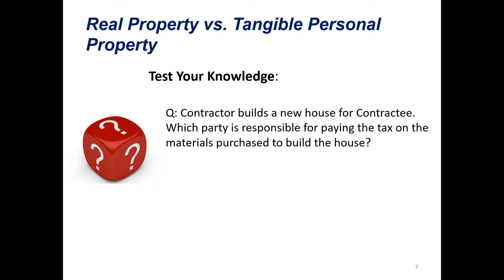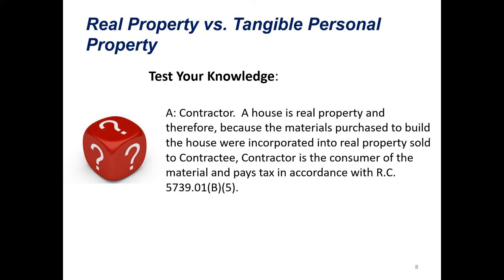First test your knowledge question: A contractor builds a new house for a contractee. Which party is responsible for paying the tax on the materials purchased to build the house? Well, a house is going to be typically considered real property, so the contractor is going to be considered the consumer—the contractor has to pay the tax on all those materials. Correct. The contractor is going to be responsible for paying tax on that material. The house is real property, and because the material purchased is incorporated into that house and sold as real property to the contractee, the contractor is going to be the consumer who pays the tax in accordance with ORC 5739-01-B5.